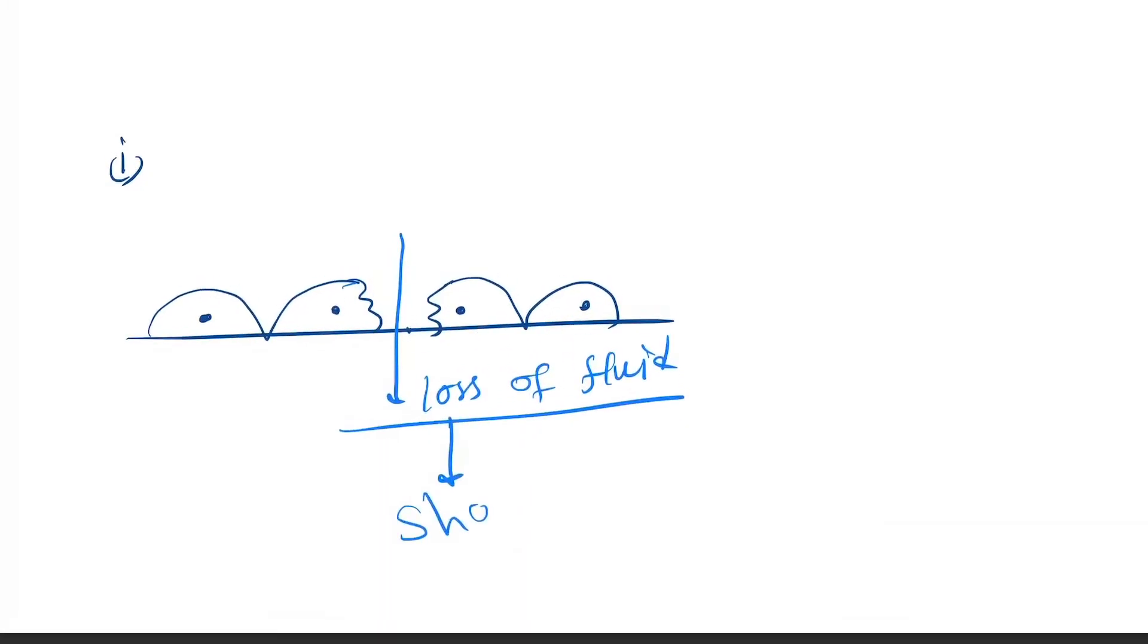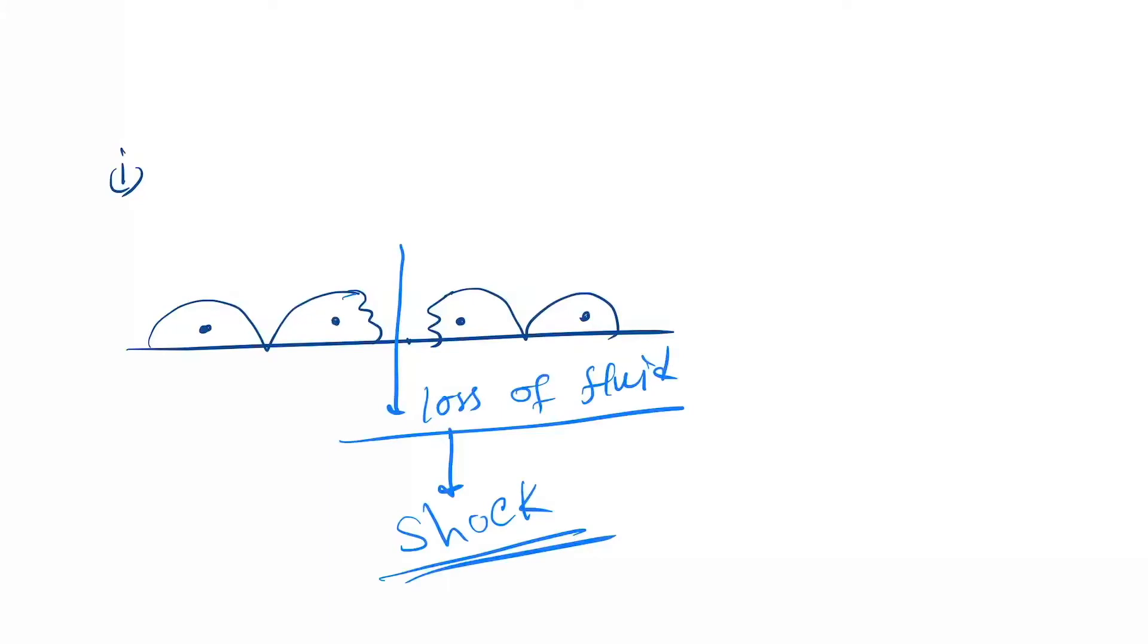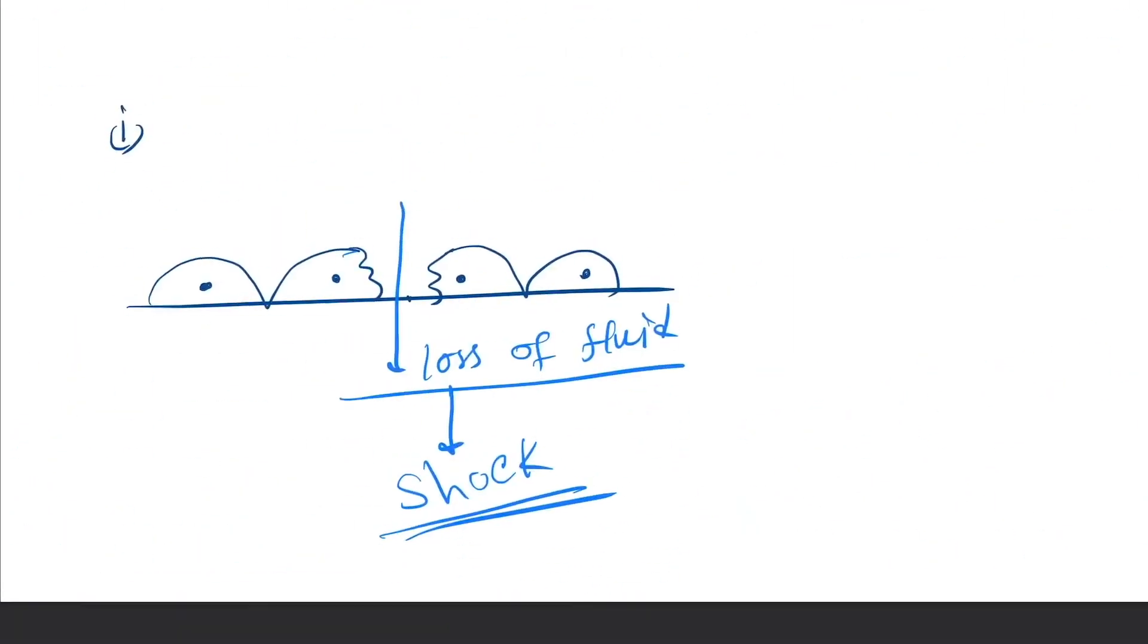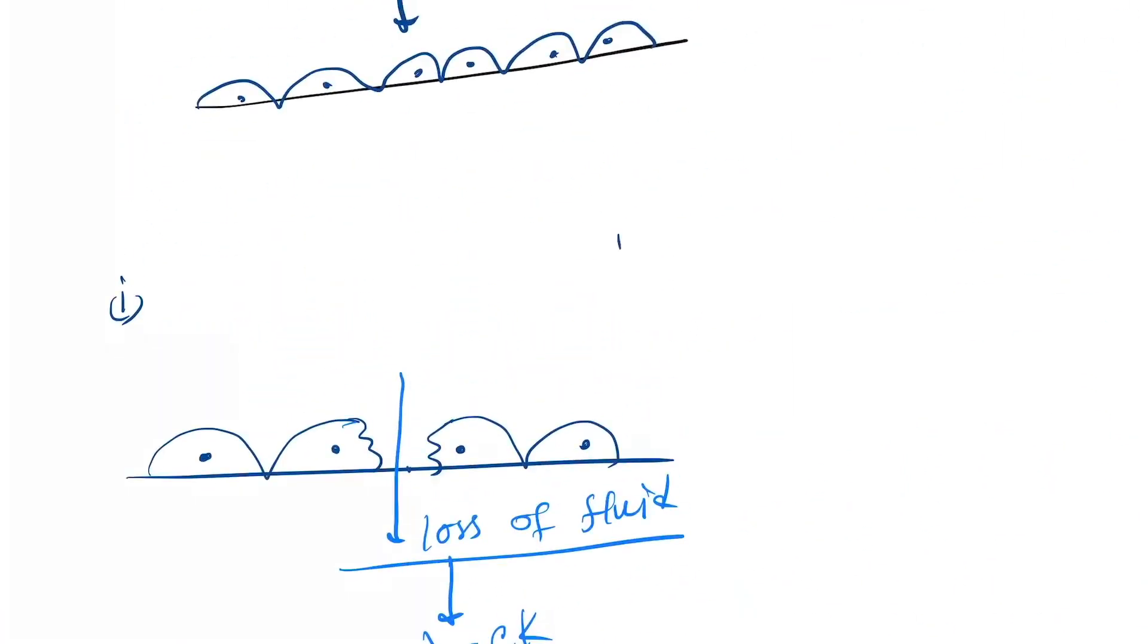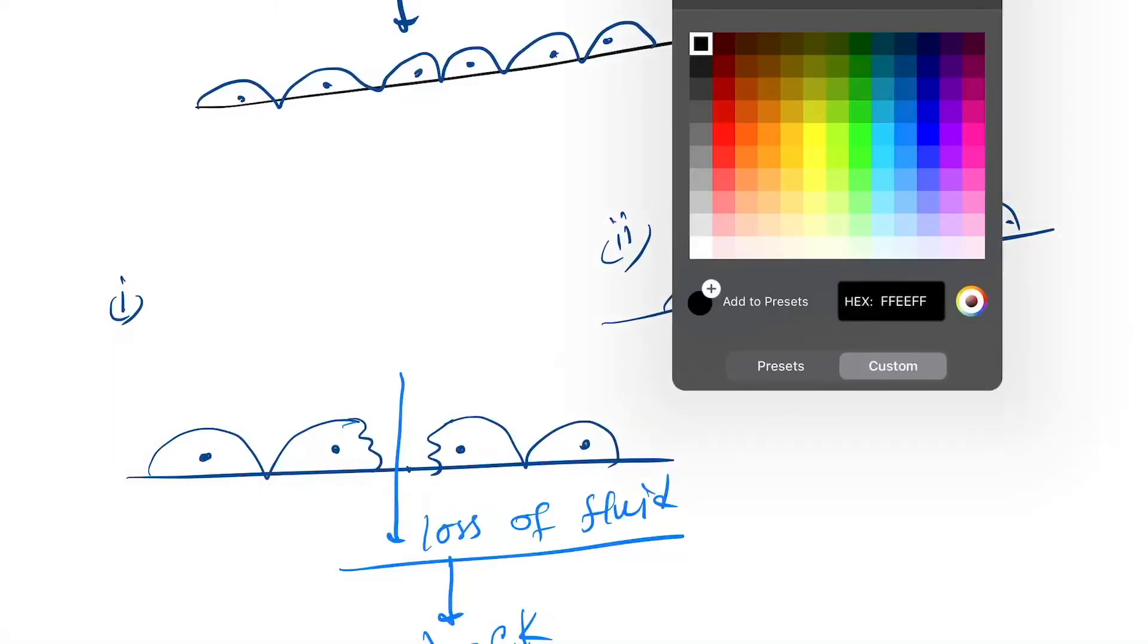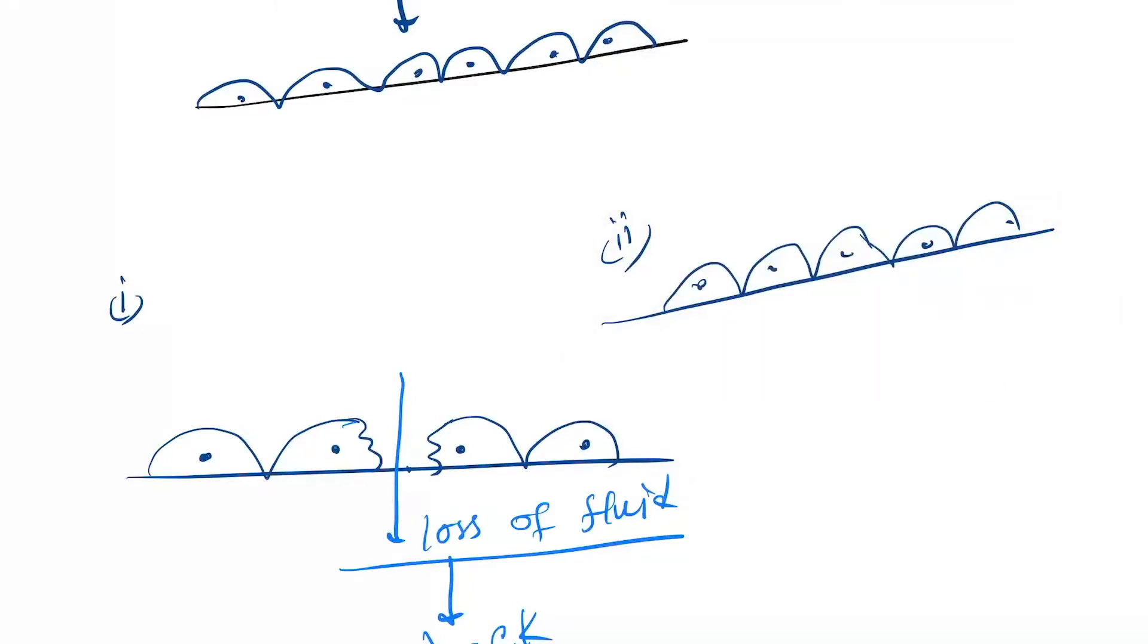Number two can be: this is the endothelial cell and here intravascular thrombosis can occur, intravascular thrombosis can occur.